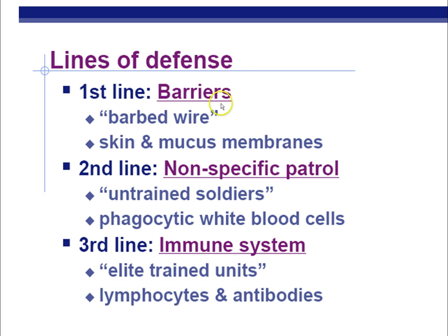The first line of defense are the barriers — think of it as the barbed wire. That's just an analogy to think of how your body is defending itself. It includes your skin and mucous membranes, and we're going to go into some details on all three lines later, but this is just an overview.